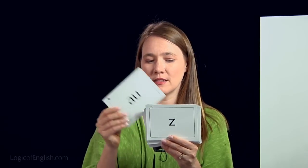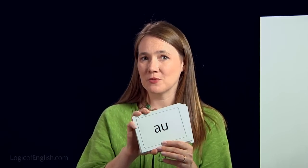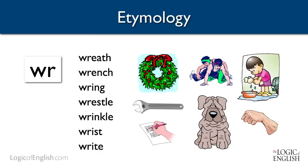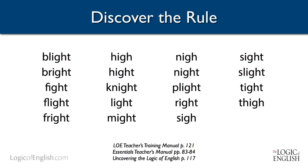We can also use etymology to help us remember which phonogram to select when there are multiple options. Here's a neat example shared by a linguist: the words wreath, wrench, ring, wrestle, wrinkle, wrist, and write all have something related in meaning — they all involve the motion of twisting. When you're writing, your wrist twists; when something's wrinkled, it's twisted. This helps students remember when to use the two-letter 'wr' phonogram.